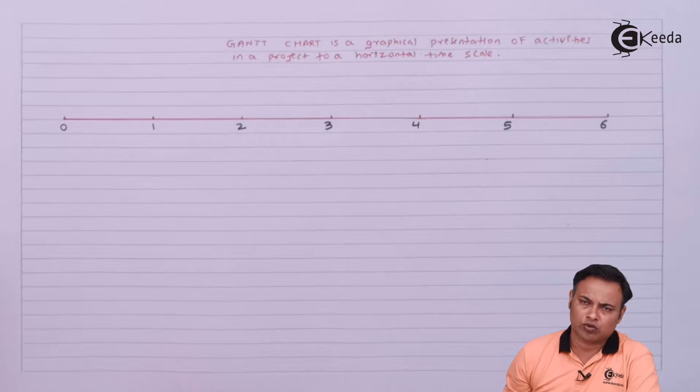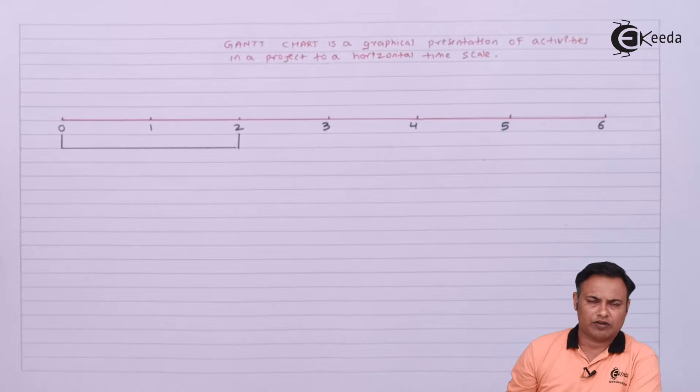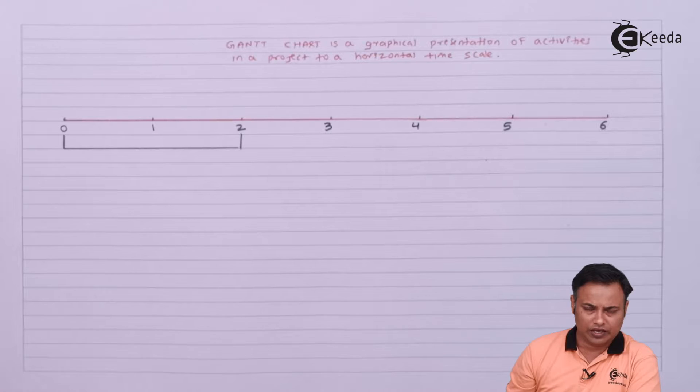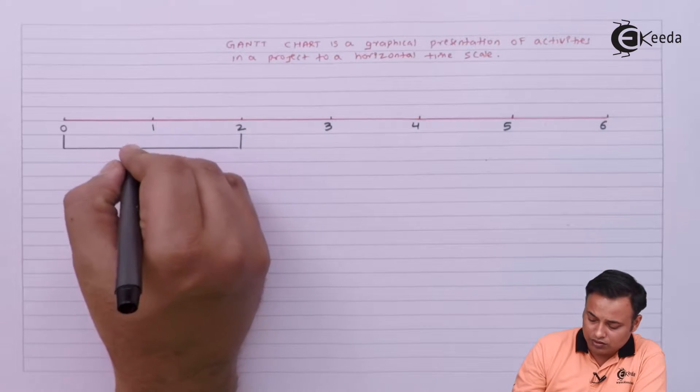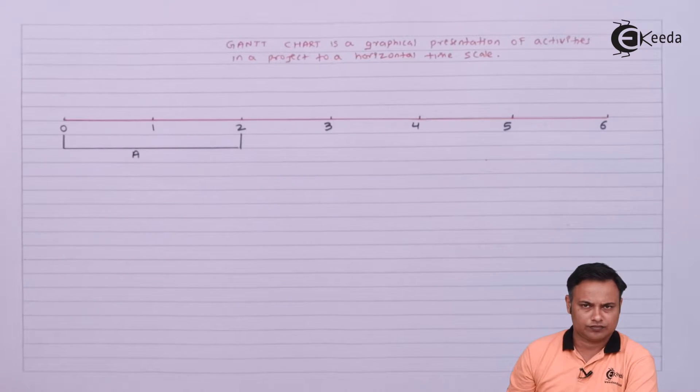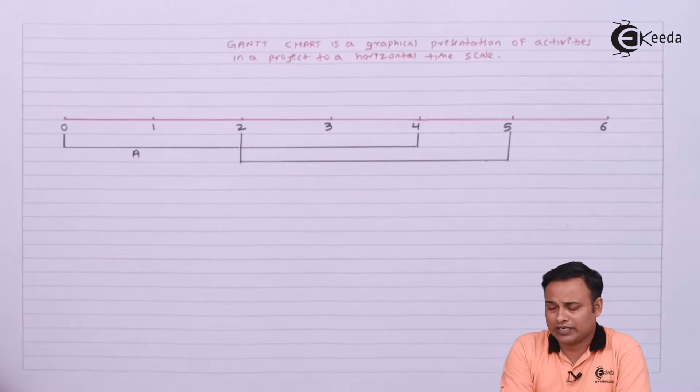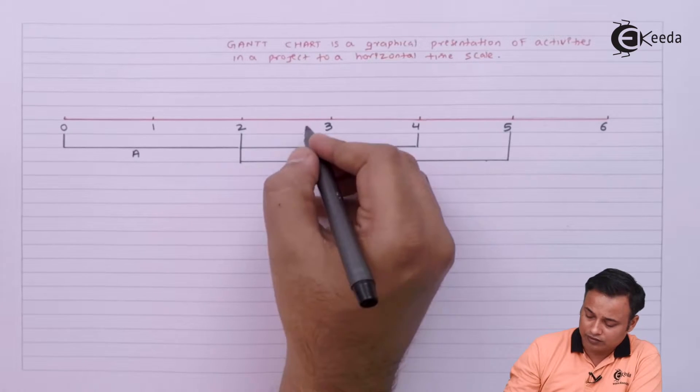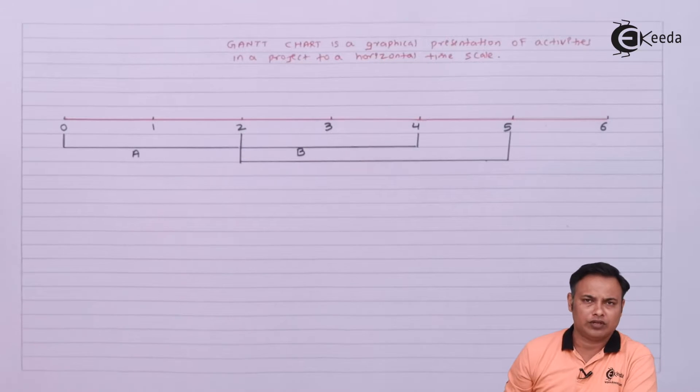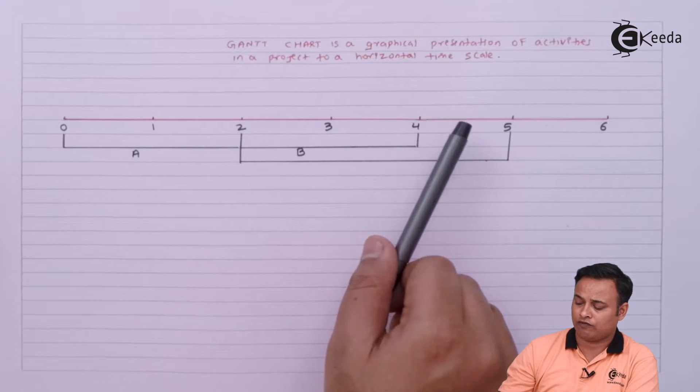Say activity A is the first activity for two days. My first activity is A - zero se do din lag jata. Then I can start activity B and C after completion of A. Activity B takes another two days, the third day and fourth day.